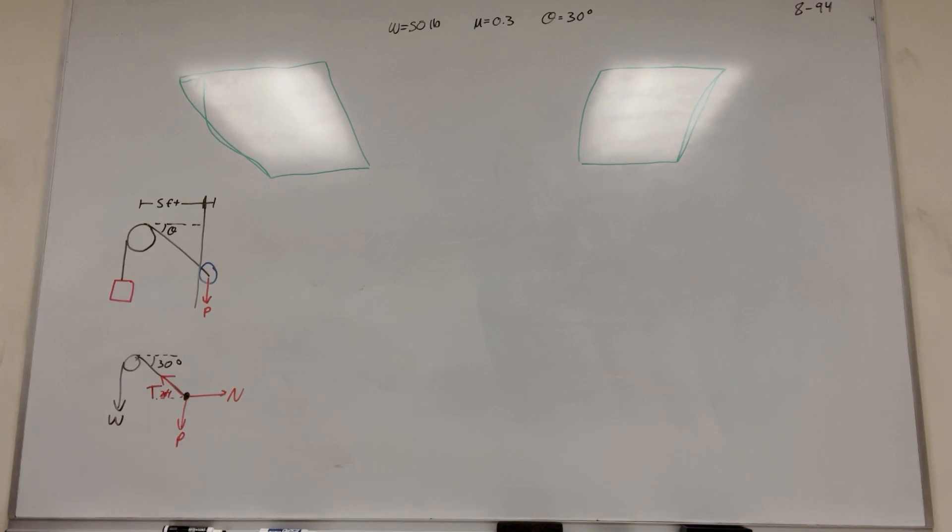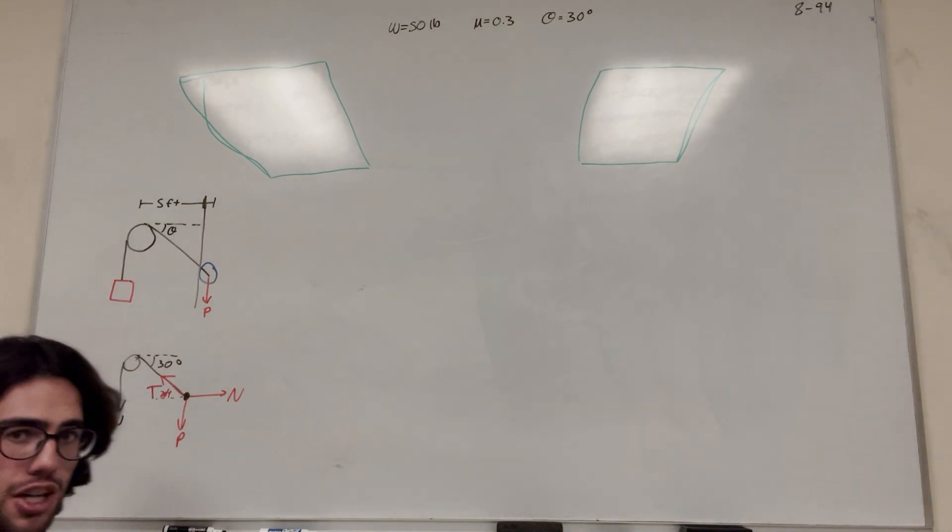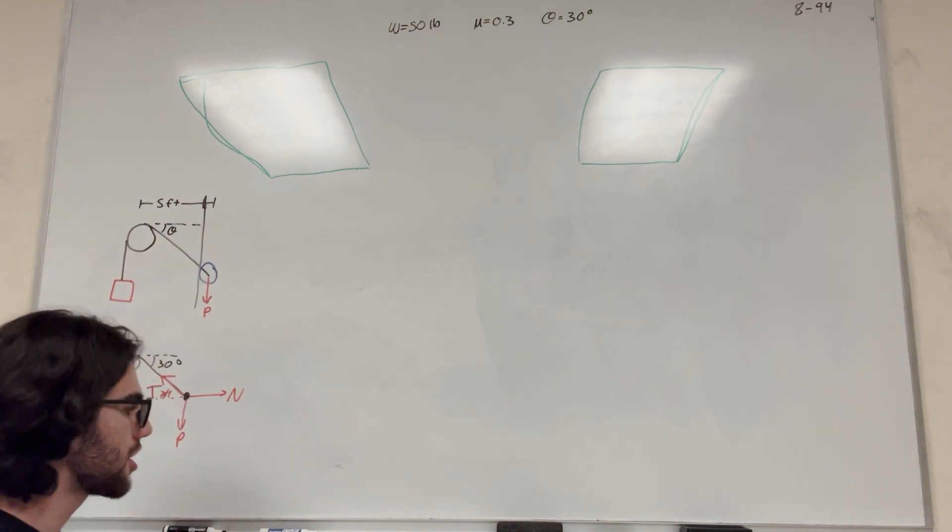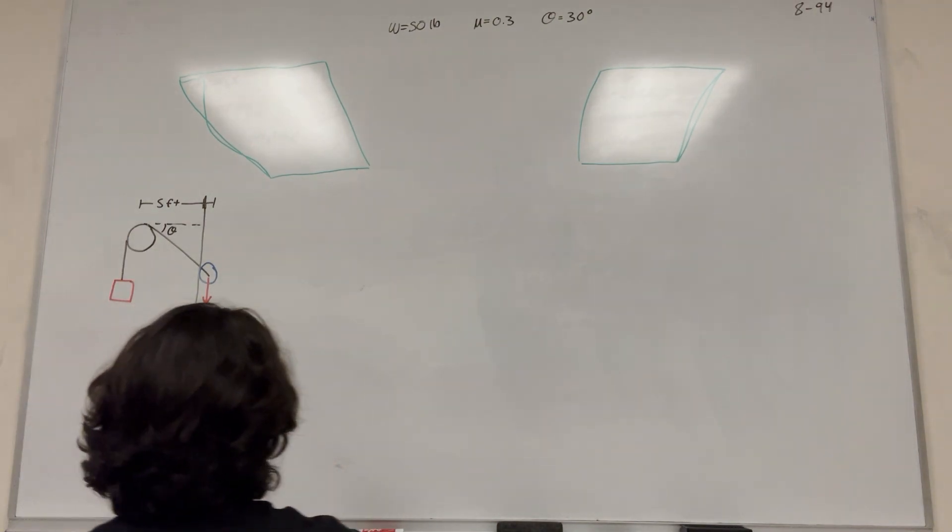So the first thing we want to find probably is this tension force. So this weight goes over the drum, which means that there's going to be friction on the drum. So we have to account for the friction on the drum in order to find T. So let's start with that.